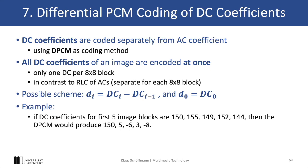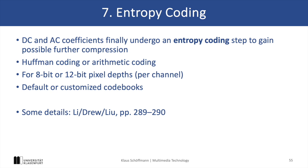Since the value range of DC coefficients is much different, they are not encoded by run-length coding but with a differential PCM coding scheme that considers all DC values of consecutive blocks. So for example, if the DC values of a few blocks are 150, 155, 149, and so on, only the first value would be entirely coded, but for the others only the difference to the previous value would be stored — resulting in 150 for the first value, then 5 and -6 for the next values. Finally, at the end of the encoding process, Huffman coding or arithmetic coding is used to encode the resulting values from run-length coding and DPCM coding.